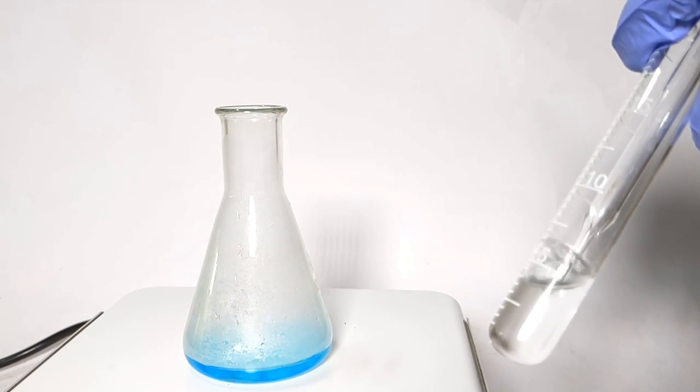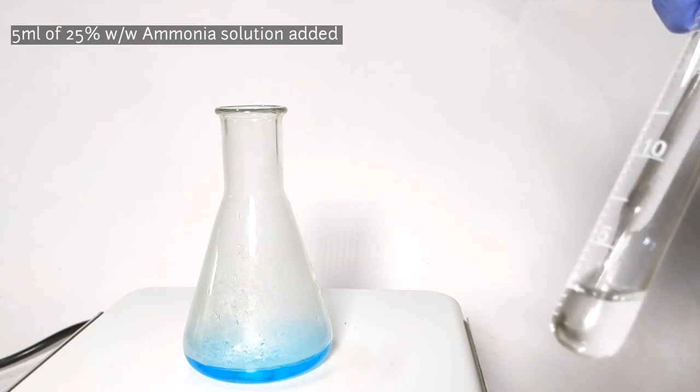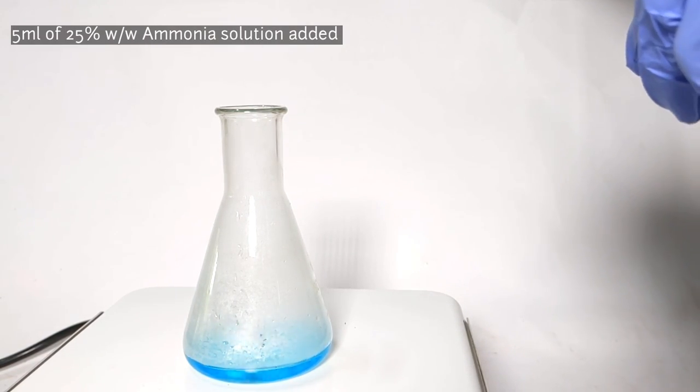Now with constant stirring, add 5 milliliters of 25% weight by weight ammonia solution using a dropper.